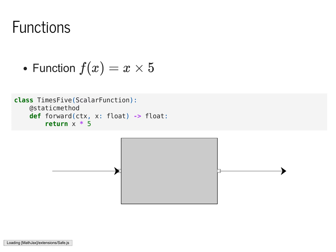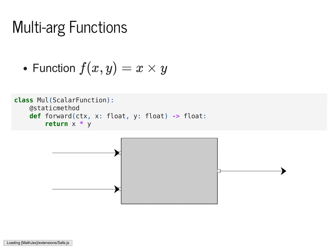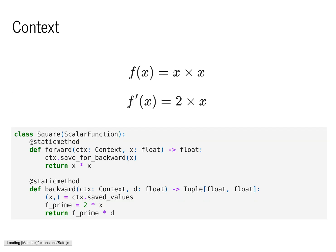These classes will have two static methods. The first is forward, which computes the function itself — in this case computing x times 5. We can also define functions of multiple arguments by returning x times 5 as the floating point value. We also defined a backwards static method, whose job it was to compute f' of this original function at a given value x. In order to use the x value, we required that the forward function call save4backwards to save this information for the backwards pass.